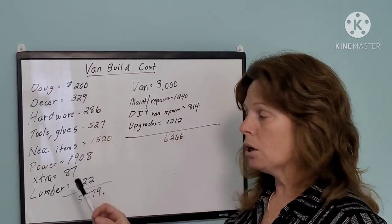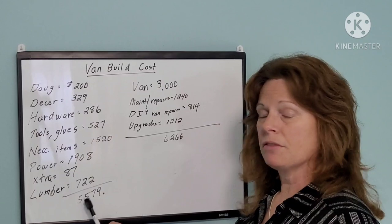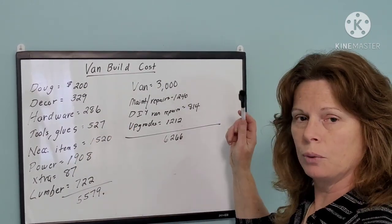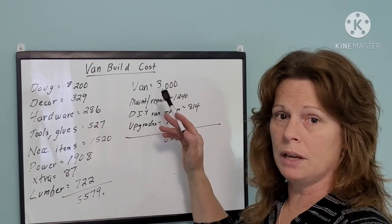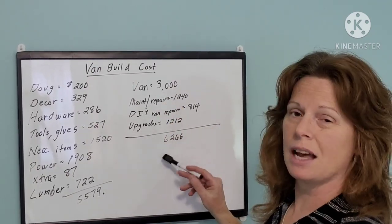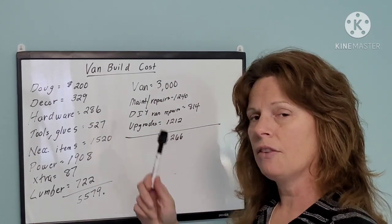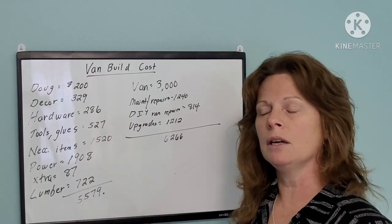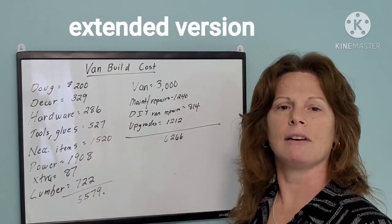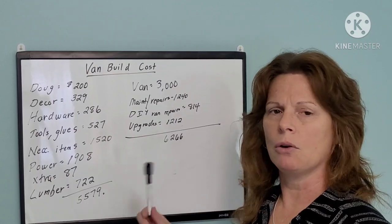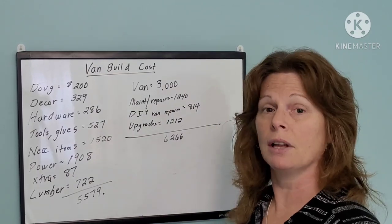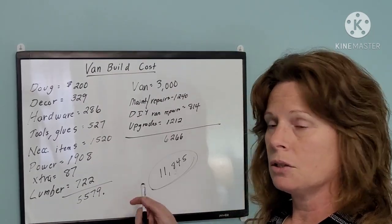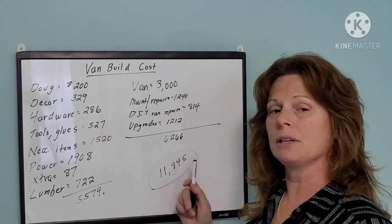All right. So as far as the build goes, it came to $5,579, these items here. And as far as the van itself, where maybe if you got a nicer van you wouldn't have to put all this money into it, that came to $6,266. I feel like I got a pretty good deal. It's a 2002 Ford Econoline E350, and it had 165,000 miles on it, but I know those vans can run 300,000, 400,000 miles, so hopefully I'll have it a long time. And the engine is very sound, it runs really great. So the total comes to $11,845.